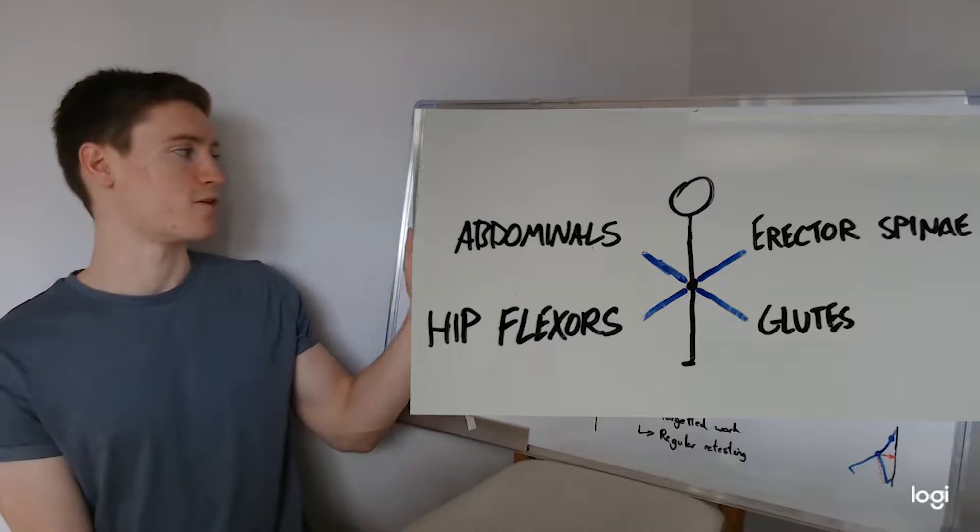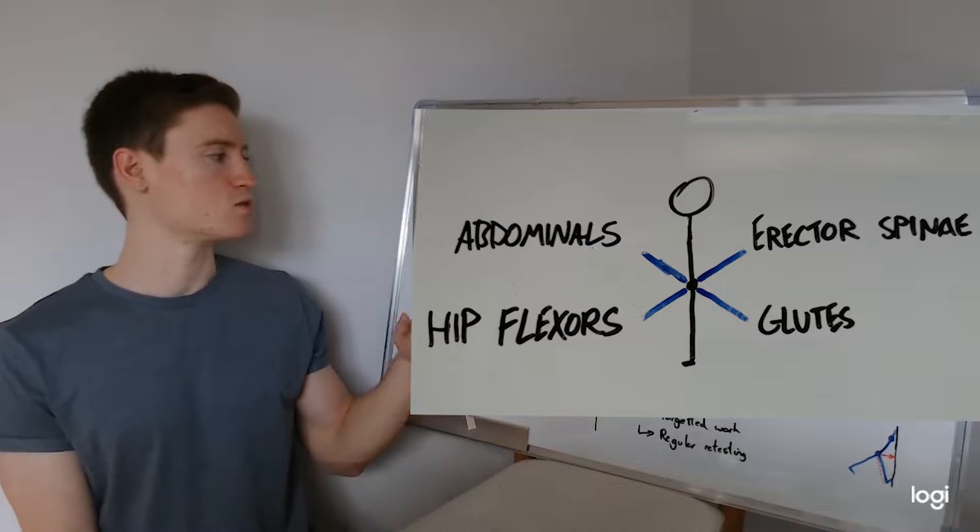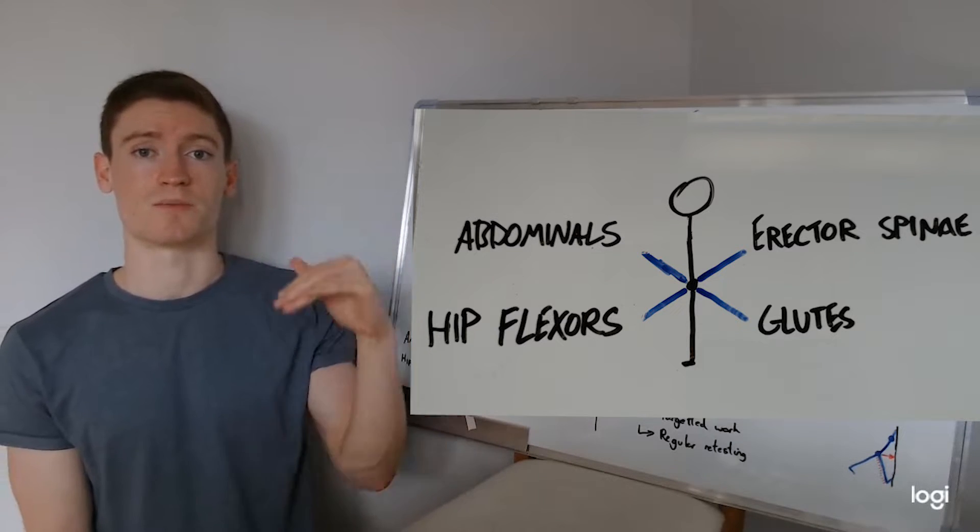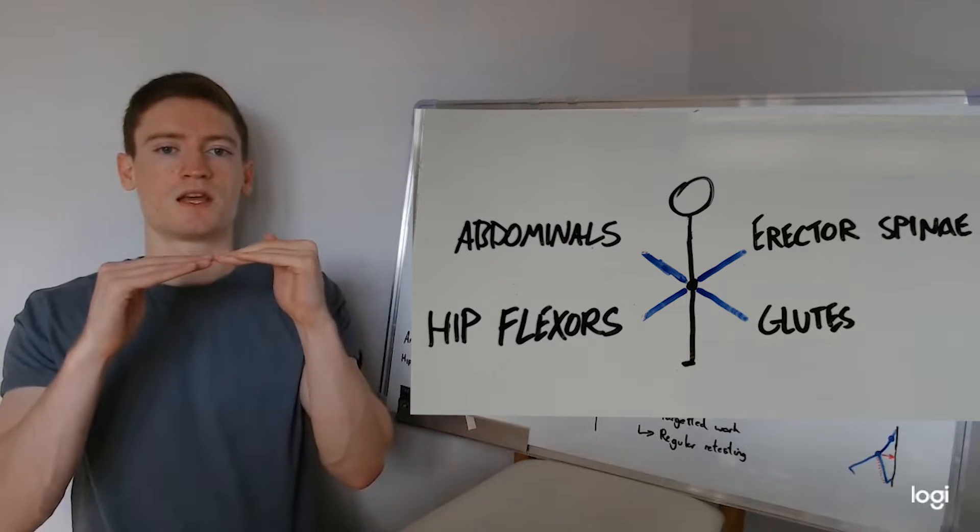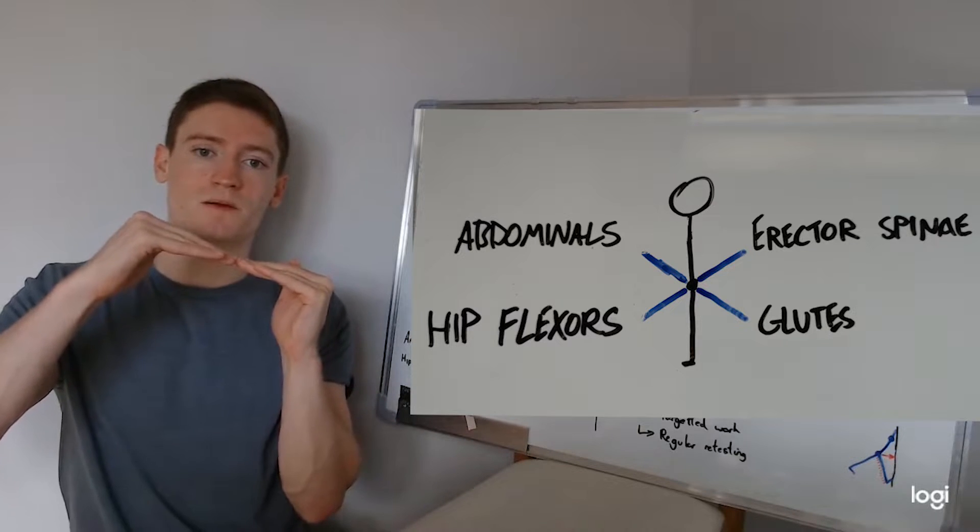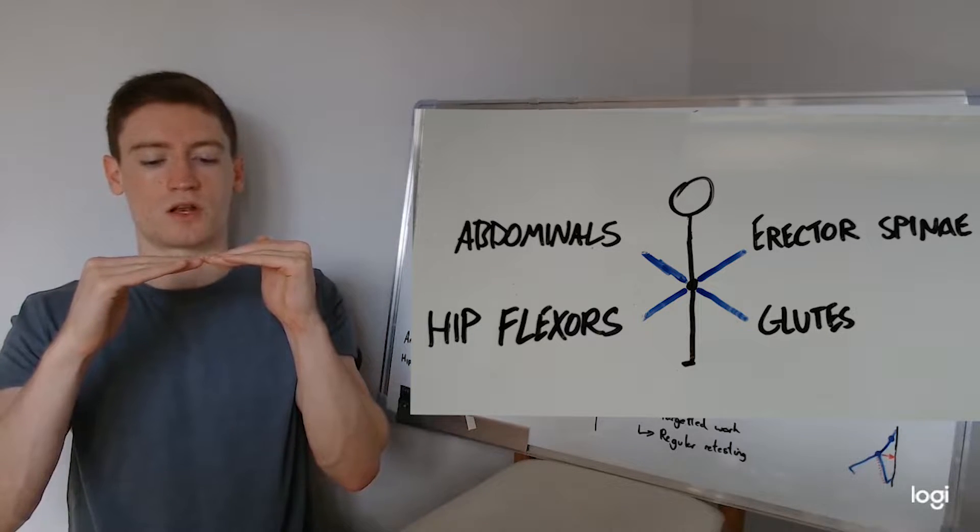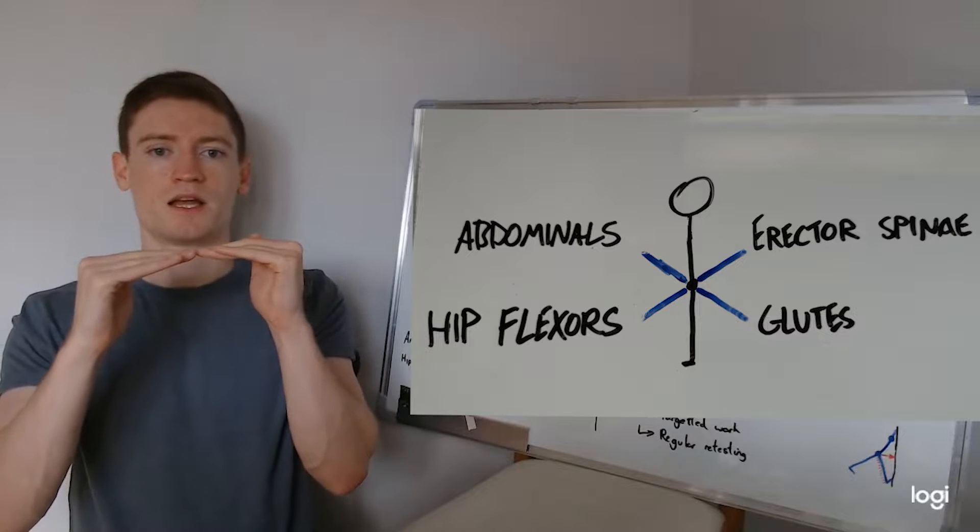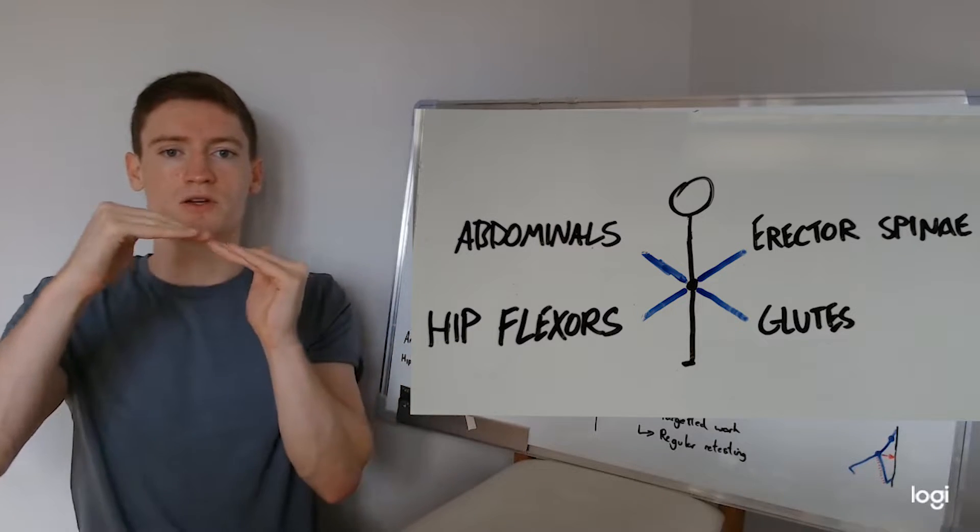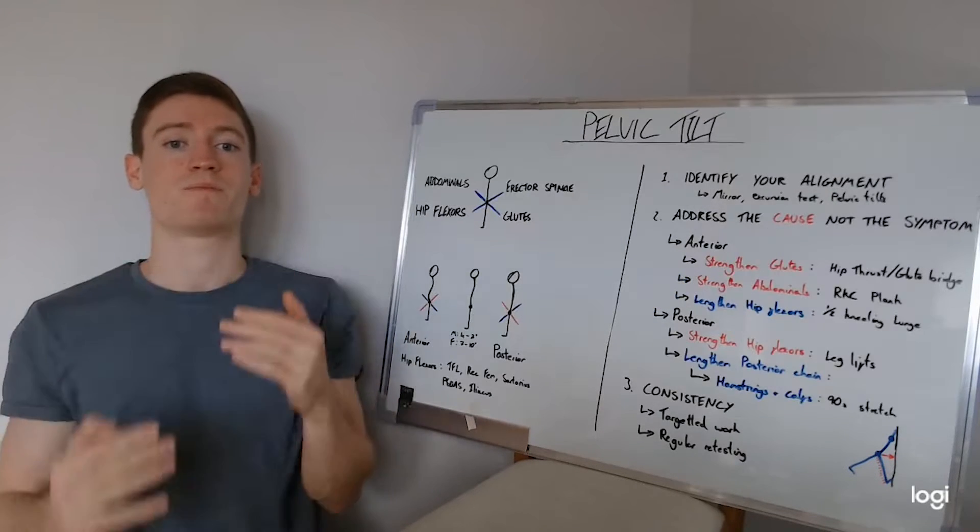Conversely, on the other side, we've got the erector spinae, which is the lower back muscles, and then you've got the glutes themselves that sit below the pelvis. Same thing. The lower back will bring the pelvis up at the back and the glutes will bring the pelvis down at the back. The result is this seesaw motion of the pelvis. We want to try and keep it nice and balanced.